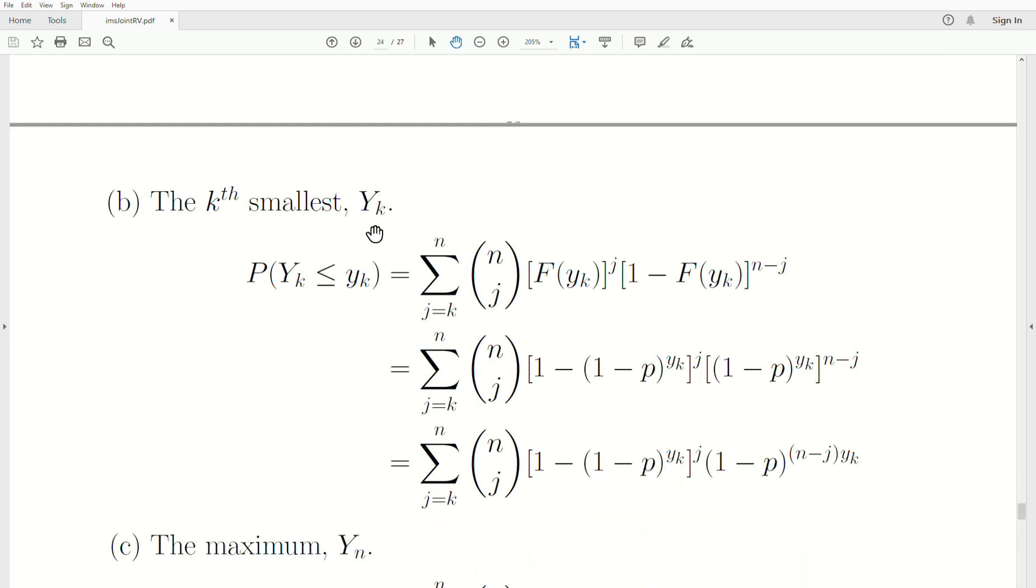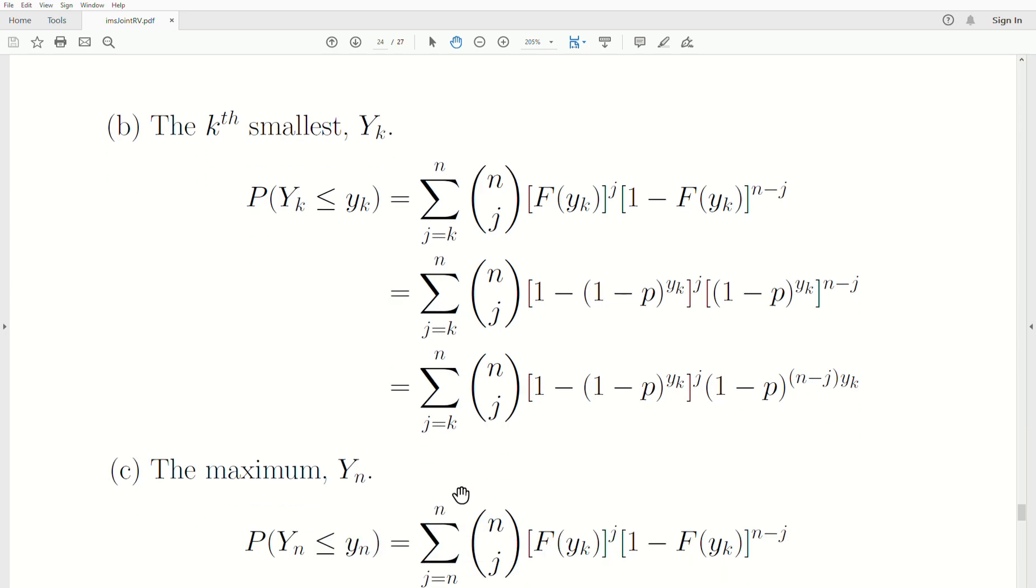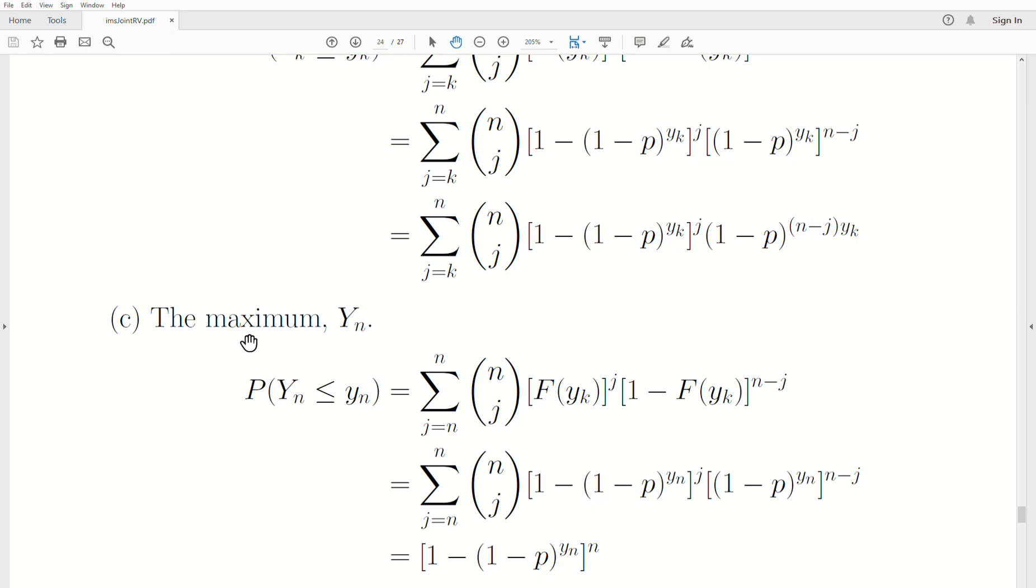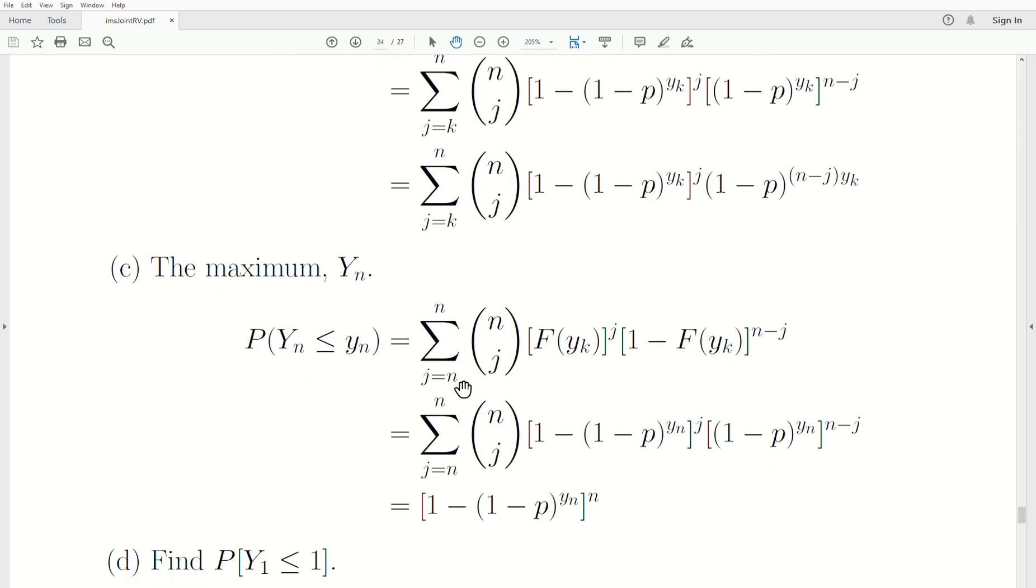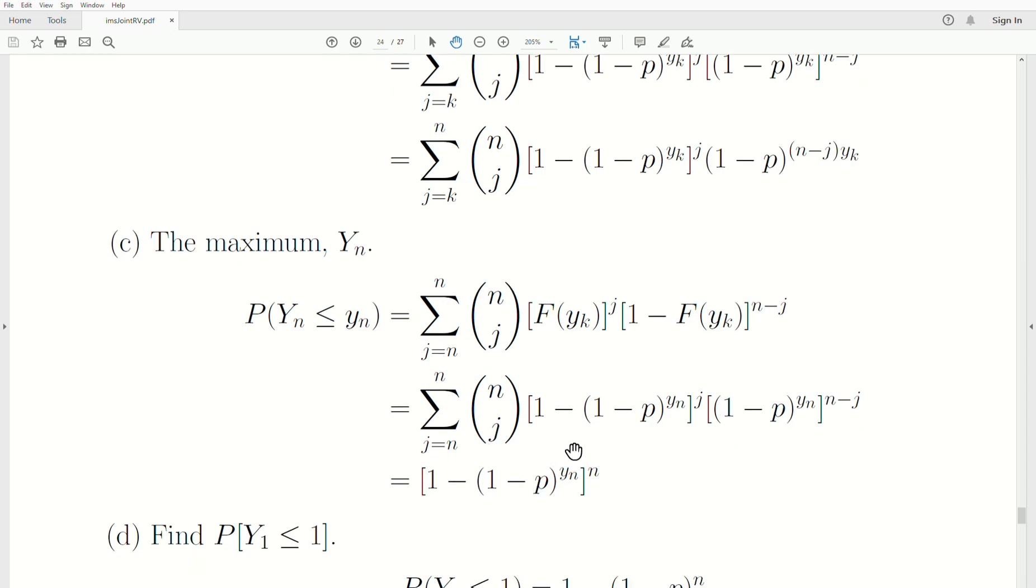If we want the kth smallest order statistic yk, then we're taking this binomial sum from k to n and we're plugging in the values. It can simplify a little bit, but not much, and that's it because generically we don't know what k is. Now the maximum, the CDF for the maximum yn is this. The probability that yn is less than some value, so we're summing from n to n of this binomial formula. We plug in our values, and really we just plug in n for j, and it simplifies to this.